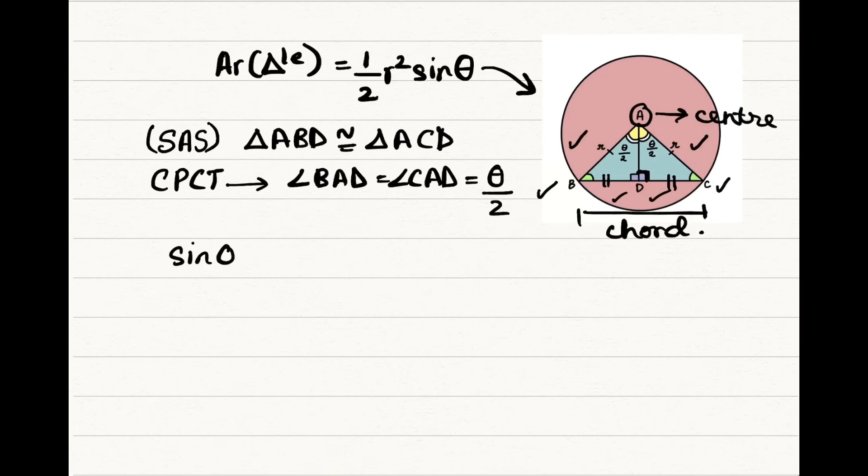Sine theta by 2 is equal to opposite, that is BD by hypotenuse which is AB is equal to r. So we can write BD is equal to r sine theta by 2.